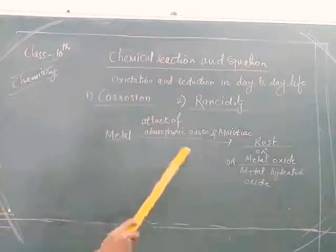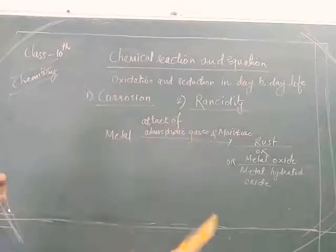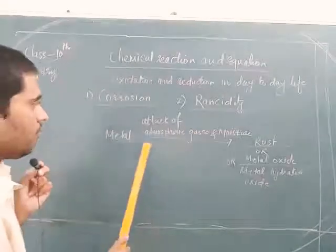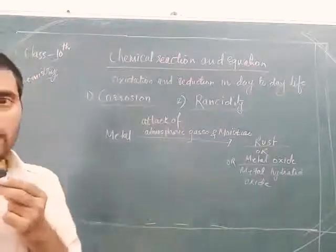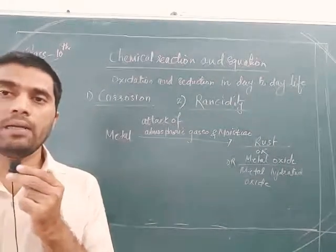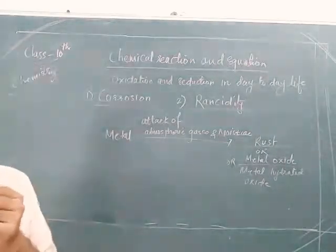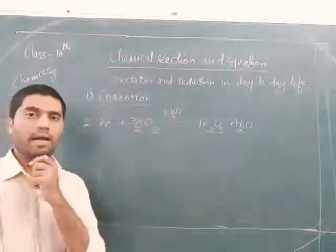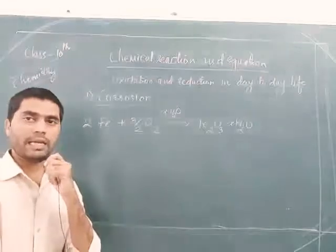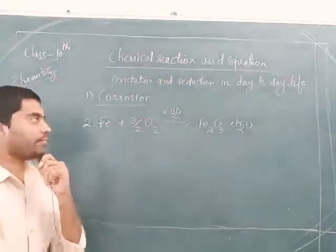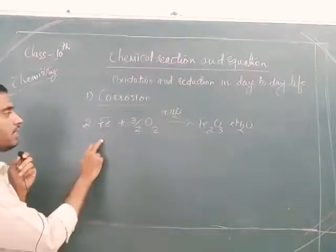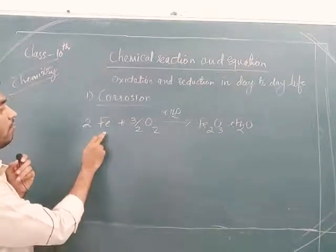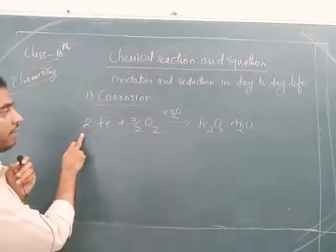On the basis of this shortcut, you can memorize the definition and also write the chemical equation of corrosion. Now we have the example of corrosion of iron. Our metal is iron.